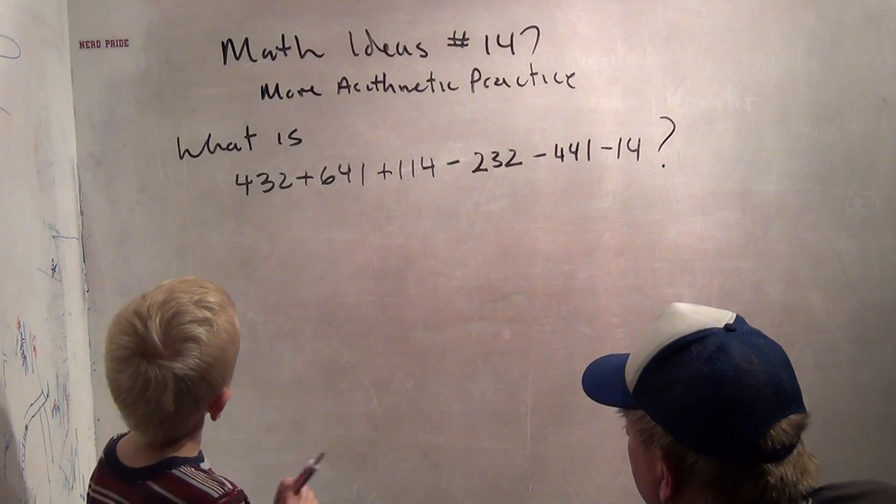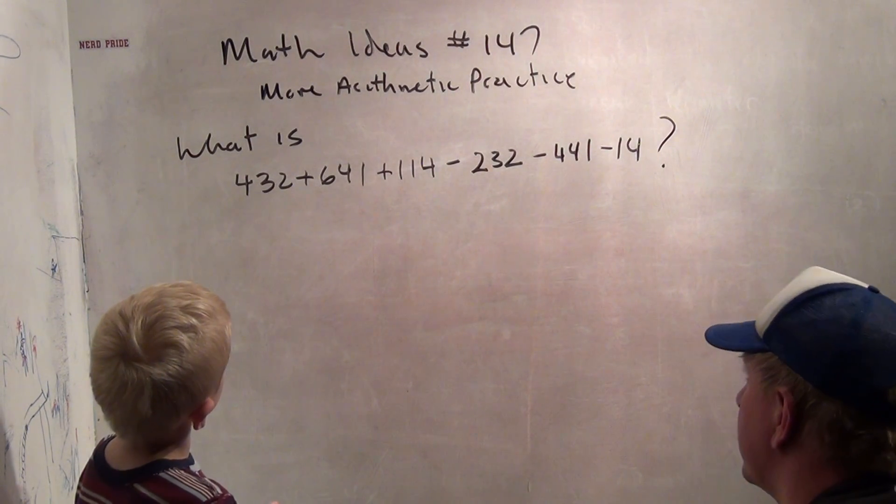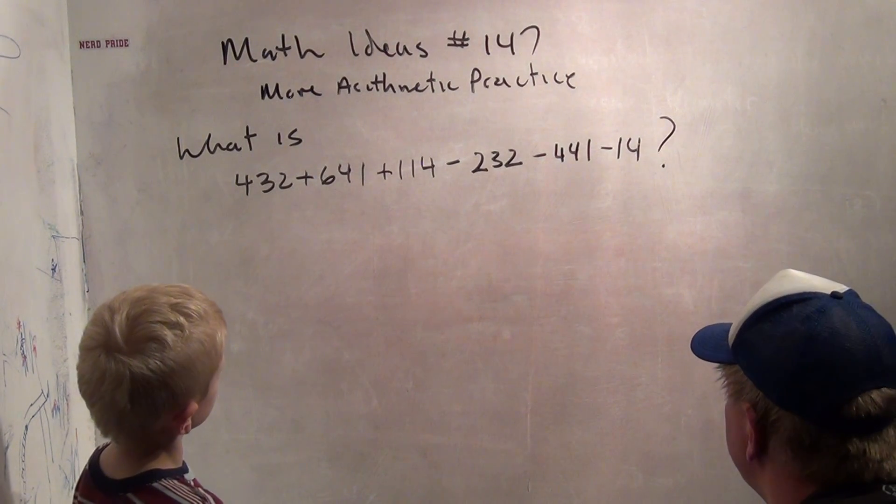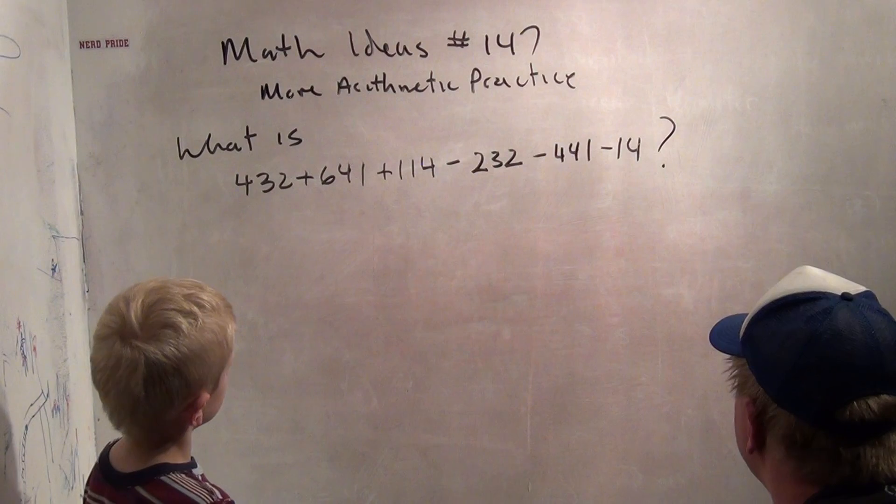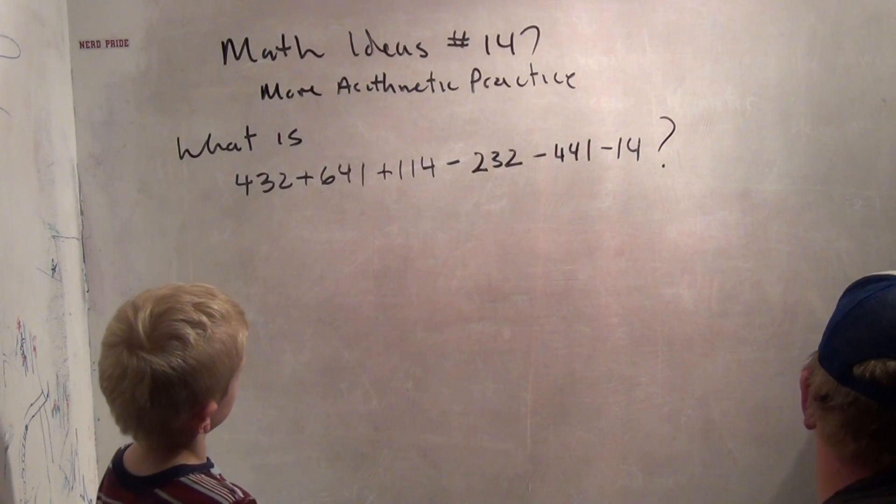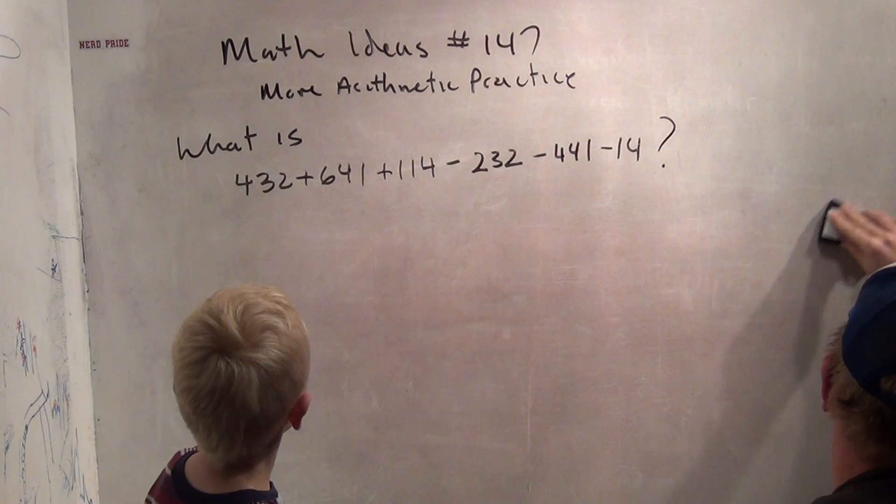Okay, here's the problem. What is 432 plus 641 plus 114 minus 232 minus 441 minus 14? What do you think? How do you think you want to approach this?